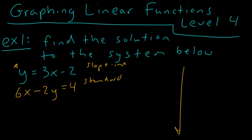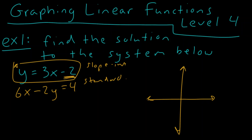Let's go ahead and graph the equation in slope-intercept form. We see that our y-intercept is negative two, so we go down two and put our very first point. Our slope is three over one, which sends us up one, two, three and to the right one. We can go one more time — up three and to the right one — then draw that line.